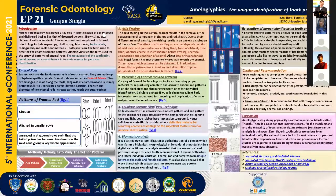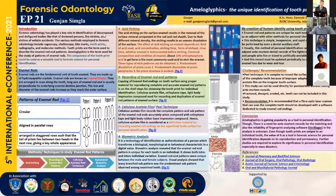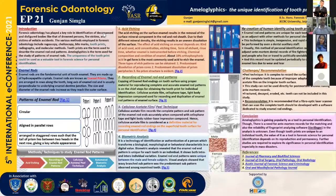In conclusion, ameloglyphics is gaining popularity as a tool in personal identification, though there is a need for ante-mortem reports for matching, and the reliability of fingerprint-analyzing software — Verifinger — in this analysis is still unknown. Even though tooth prints are unique to an individual tooth, the value as a forensic tool depends on their reproducibility and permanency. Further studies are required to explore its significance in personal identification, especially in mass disasters.